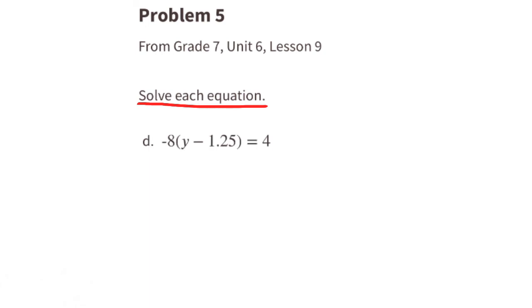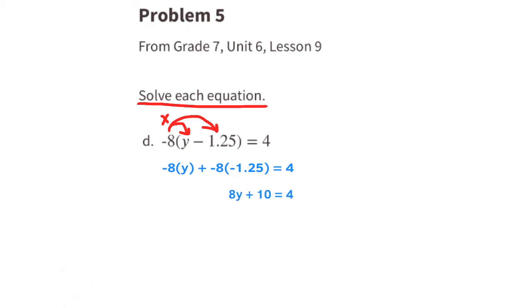Part d: use the distributive property and multiply negative 8 by both terms in the parentheses. This becomes negative 8 times y plus negative 8 times negative 1.25 equals 4. A negative times a negative equals a positive, so it now reads positive 8y plus 10 equals 4.